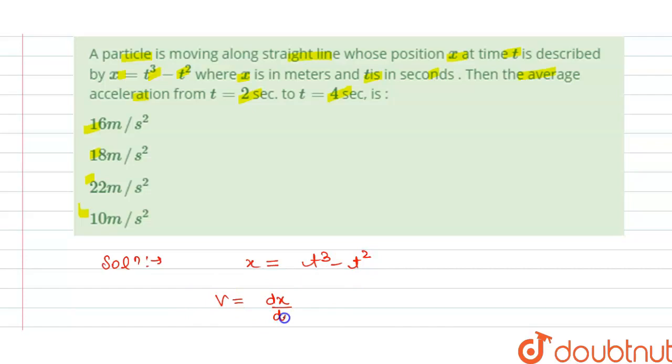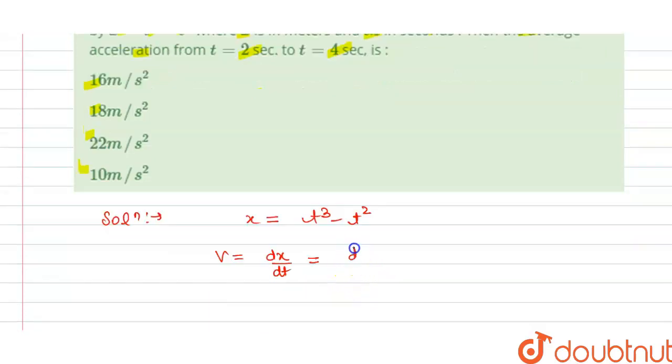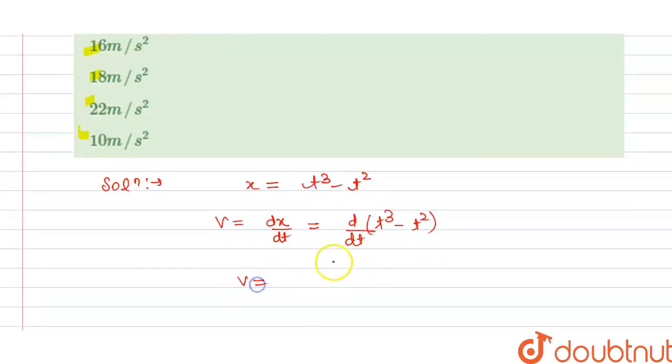So this is differentiation with respect to t, so this is t cube minus t square. If we differentiate this, we get 3t square minus 2t. So this is our velocity v here.